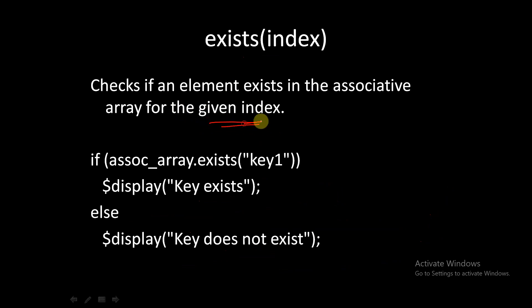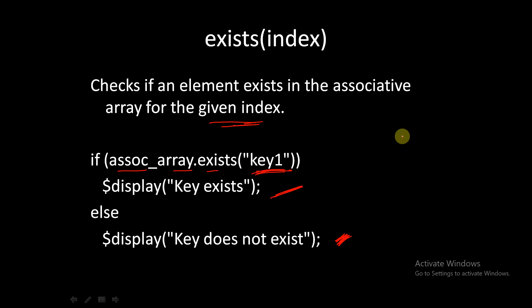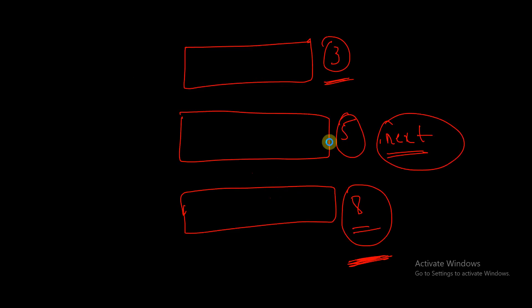The `.exists` method checks if an element exists in the associative array for the given index. For example, `assoc_array.exists(key1)` will go to index `key1` and check whether that index exists. If it exists, one display statement is shown; otherwise another is shown. Since associative arrays are non-contiguous, `.exists` is useful to verify whether a particular memory location is present.